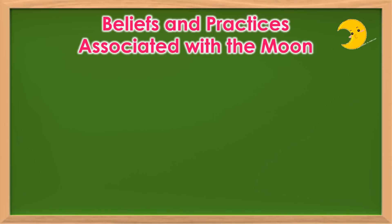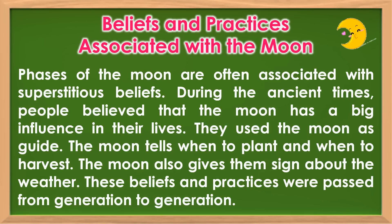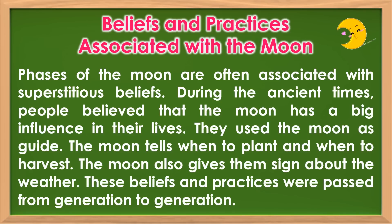Beliefs and practices associated with the moon. Phases of the moon are often associated with superstitious beliefs. During ancient times, people believed that the moon has a big influence on their lives. They used the moon as a guide — it told them when to plant and when to harvest, and also gave them signs about the weather. These beliefs and practices were passed from generation to generation.